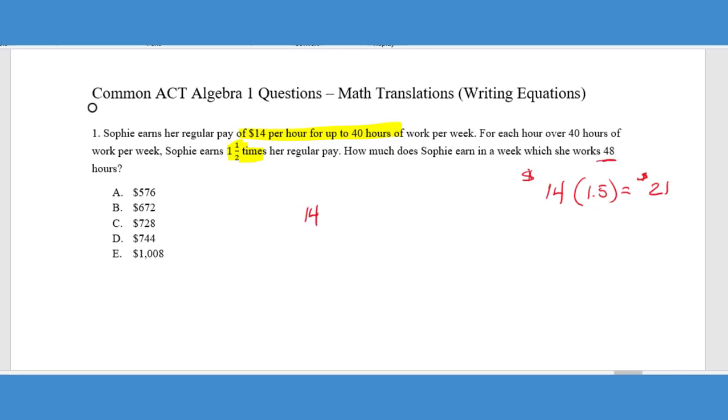So how much does Sophie earn in a week if she works 48 hours? Well, we know that she's going to earn $14 an hour for 40 hours. But we're also going to get $21 an hour for the remaining eight hours. And that's over 40. And so $560 for her base pay and an additional $168. So Sophie would earn $728 for her week of 48 hours. And so if we look at the answer choices, we can see that that is choice C, $728.